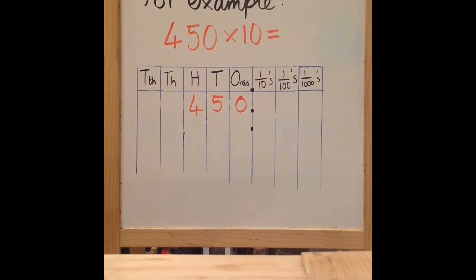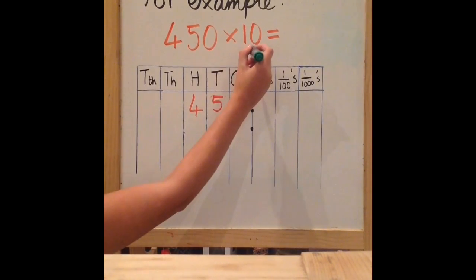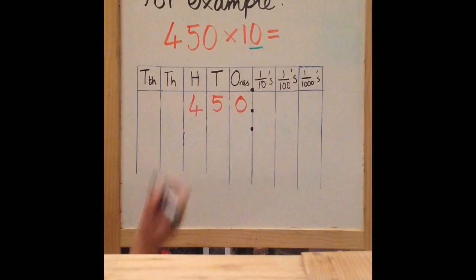This is a common misconception, but rest assured, the decimal point never moves — it's only the digits. So I'm multiplying, so my number must be getting bigger. Therefore, my digits are moving to the left. As 10 has one zero, my digits are moving 1 place to the left.